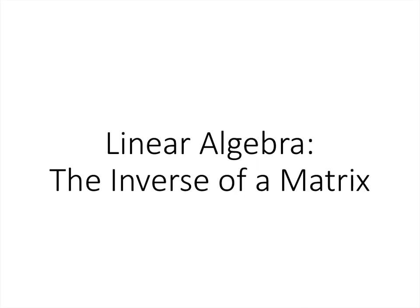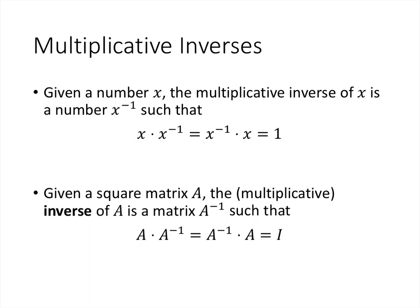In this video, we're going to talk about the multiplicative inverse of a matrix. We've seen multiplicative inverses of numbers — when we write a number to the negative 1 power, that means the number that when we multiply it by x, we just get 1. For numbers, we think of this as 1 over x. It's the number that when we multiply it by x, we get the multiplicative identity, which is 1.